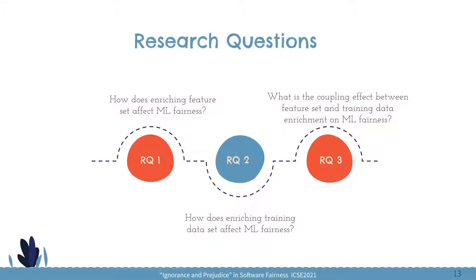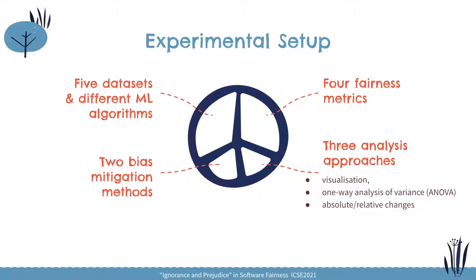We design three research questions. The first question is about how enriching the feature set affects machine learning fairness. The second research question studies the influence of enriching the training data set on machine learning fairness. And for the last research question, we explore the coupling effect between feature set and training data set enrichment. We choose five widely used data sets in the fairness literature, use different machine learning algorithms, four fairness metrics to measure fairness changes, and two bias mitigation methods.